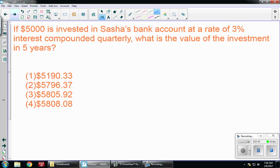So let's look at the first question. If $5,000 is invested in Sasha's bank account at a rate of 3% interest compounded quarterly, that's important, what is the value of the investment in five years? So if I'm compounding quarterly, I'm going to use that first formula.